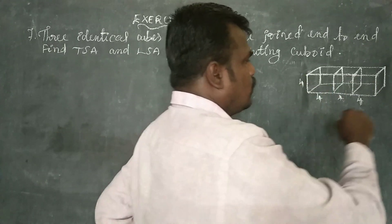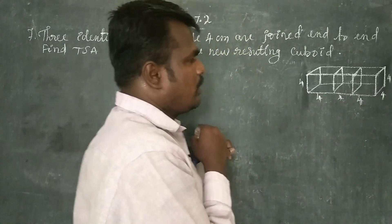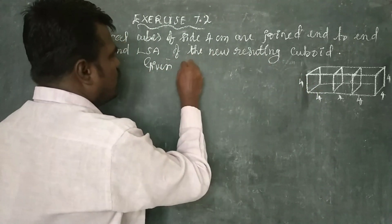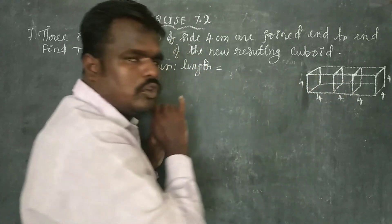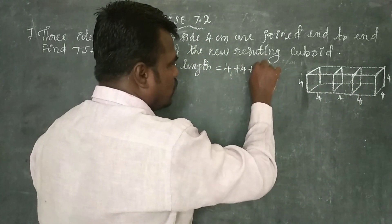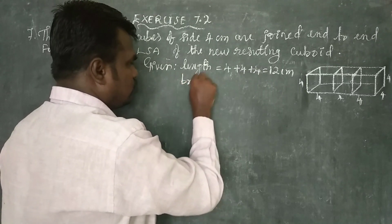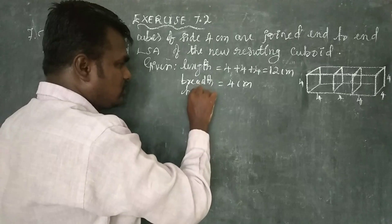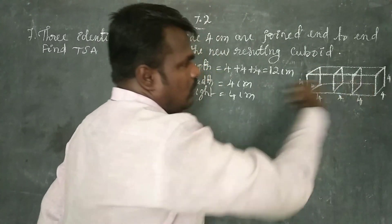Height is 4 centimetres. Given: length equals 4 plus 4 plus 4 equals 12 centimetres. Breadth equals 4 cm. Height equals 4 cm.